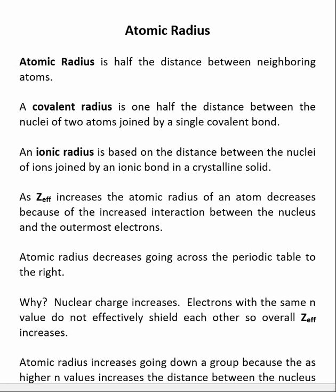The first periodic trend we're going to talk about is atomic radius. Atomic radius is defined as half the distance between neighboring atoms. Because there are two different types of bonds, we need to be very specific. We can have a covalent radius, which means half the distance between two atoms joined by a covalent bond, or we can have an ionic radius, which is half the distance between ions joined in an ionic bond in a crystalline solid.